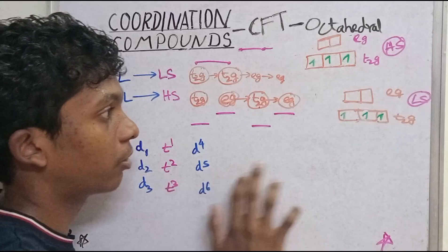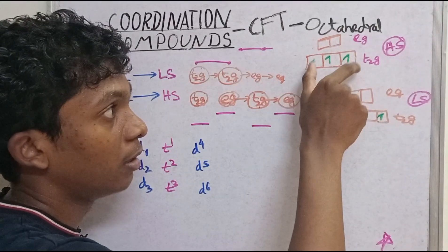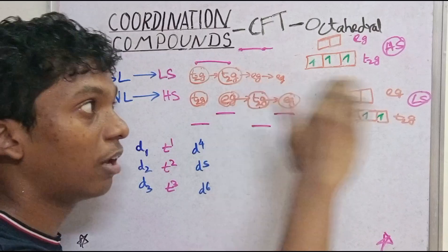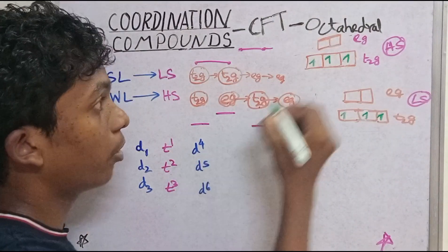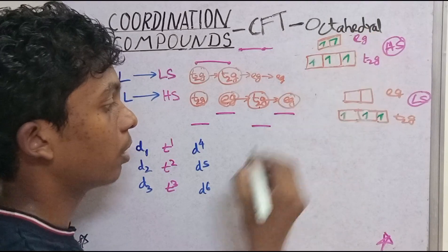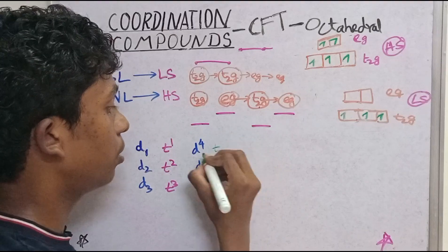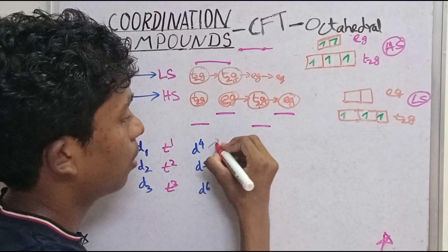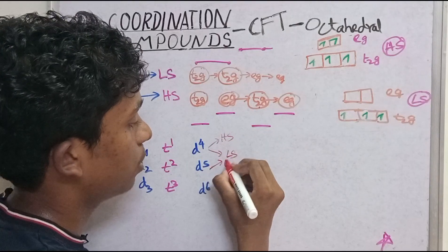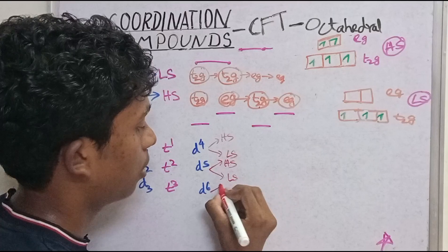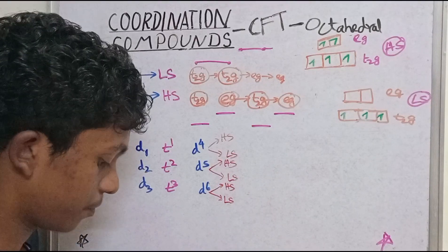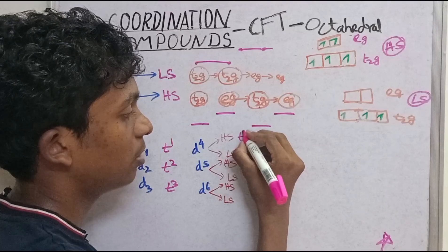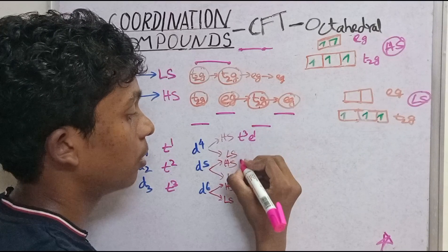D4 — the 4th electron is high spin. For high spin D4, it goes to eg. So high spin D4 gives T2G³ E1. For D5 high spin: T2G³ E2. Now low spin D5 — what is low spin? Pairing occurs, so low spin D5 gives T2G⁵ with pairing.